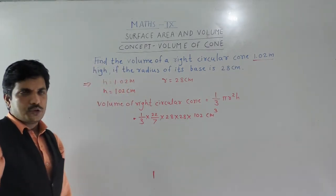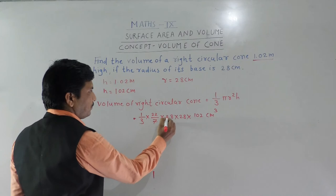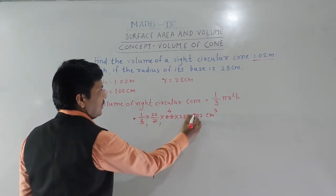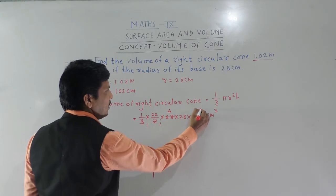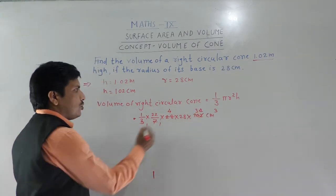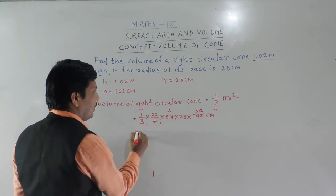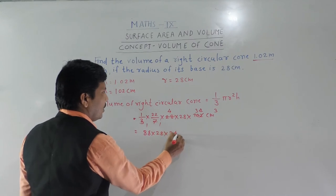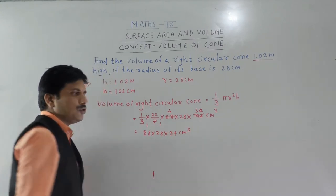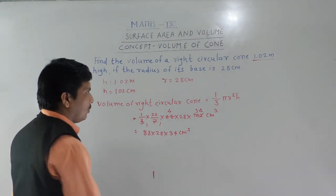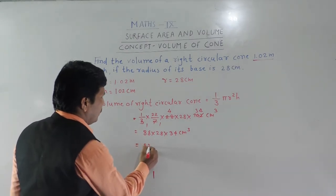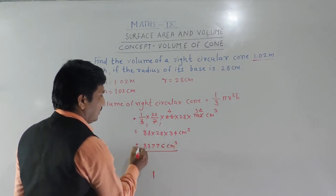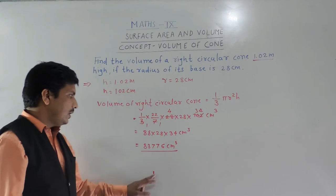The answer will come in cubic centimeters. We can cancel 7 into 28 — 7 fours are 28. Also simplify 3 into 102 — 3 times 34 is 102. So we need to multiply 22 by 28 by 34. The final product gives us 83,776 cubic centimeters.